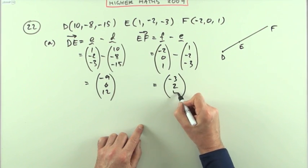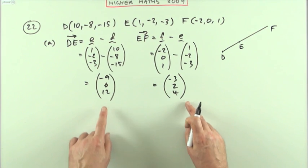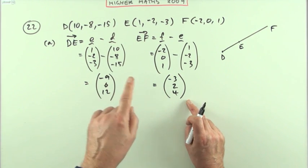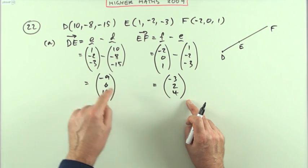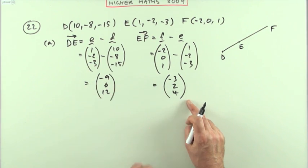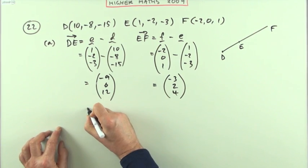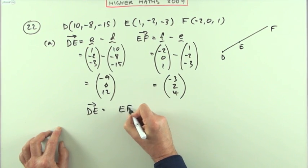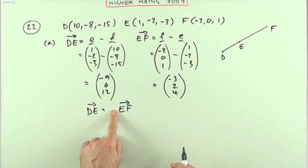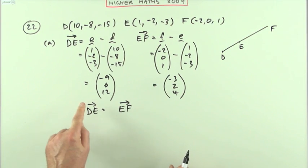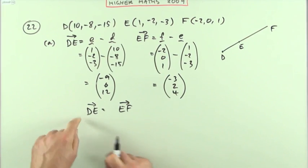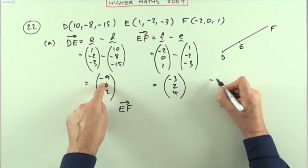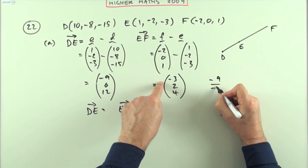Now we're hoping there's some connection between the two of these. -2 take away 1 is -3, 0 take away -2 is 2, 1 take away -3, 1 plus 3 is 4. Now for them to be parallel, this would have to be some multiple of this. That means each of the components must produce the same multiple.